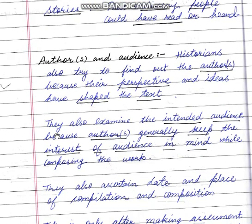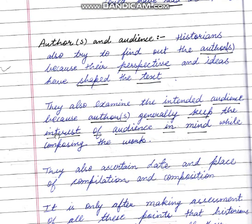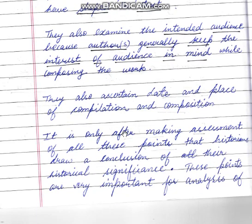The third point is 'Authors and Audience.' These are actually two points but I have clubbed them into one to keep the answer compressed. Give a little information about authors and a little about audience. This makes it easier for the examiner and keeps the answer within the word limit.